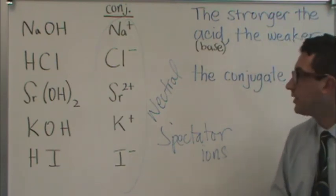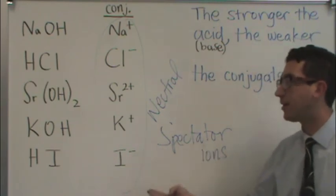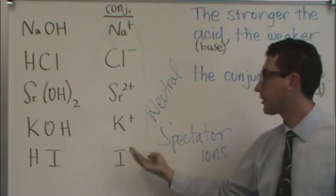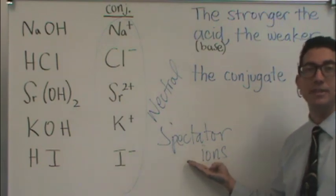However, now you know what a spectator ion is. It's the conjugate of a strong. And the conjugate of a strong is neutral, and that's why it doesn't do anything.